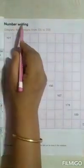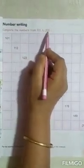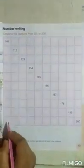Now come to page number 13. The topic here is number writing. The question is complete the numbers from 101 to 200. So a grid is given here. You have to write down the counting.